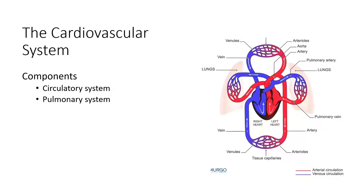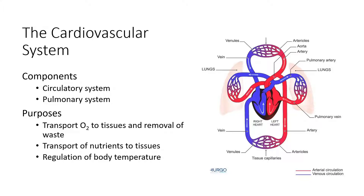The cardiovascular system is made up of the circulatory and pulmonary systems. The circulatory system takes blood to the rest of the body and back to the heart; the pulmonary system takes blood from the heart to the lungs and back. The purposes of this are to transport oxygen to tissues, remove waste products, transport nutrients for metabolism, and regulate body temperature by moving blood through capillaries to different areas.